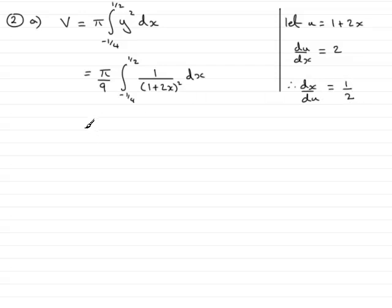So I would have π over 9, then the integral, and this becomes 1 over u squared. Remember that dx is the same as dx over du multiplied by du, so dx over du is 1 half, so put that in as 1 half and du there.